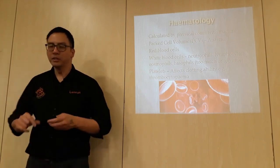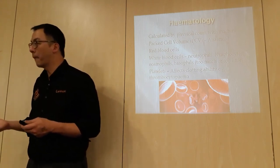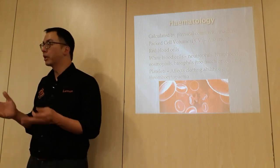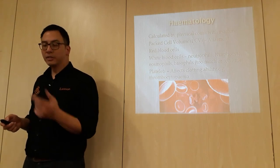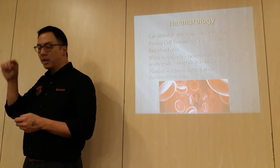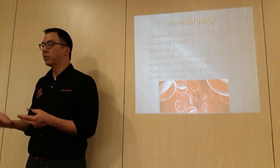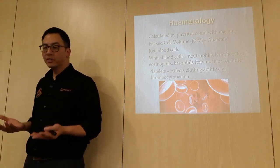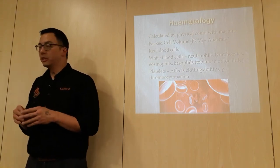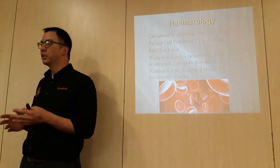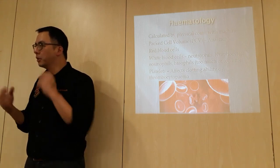PCV is how we check if a dog or cat is anemic - it's all about proportion. Looking at white blood cells, there are several types: neutrophils, lymphocytes, eosinophils, and basophils. For all these components, we ask whether there is too much or too little and why.